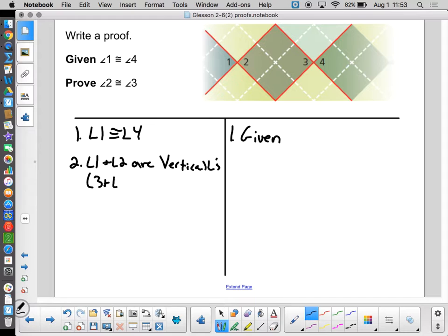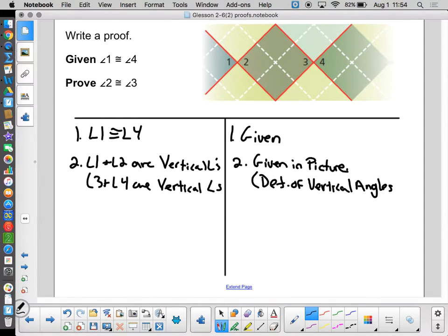And angle 3 and angle 4 are vertical angles. Notice I'm using the symbol here to shortcut just because I'm running out of space. What tells us that's true? I'd accept a couple different reasons here. The easiest thing that I'm going to put is given in picture. I'll write it that way. The picture shows us that. It's not written as a given, but it is in the picture as something that is there. I would also accept definition of vertical angles as a reason. But really, the picture is giving that to us, so given in picture, I think, is the easiest way.